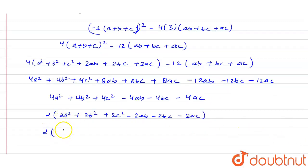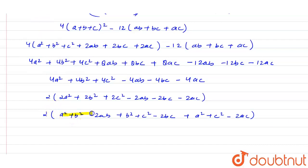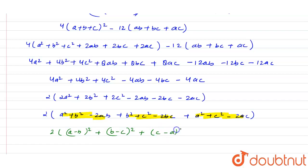This simplifies to 2(a² + b² - 2ab) + 2(b² + c² - 2bc) + 2(a² + c² - 2ac), which can be written as 2(a - b)² + 2(b - c)² + 2(c - a)², or twice of [(a - b)² + (b - c)² + (c - a)²].